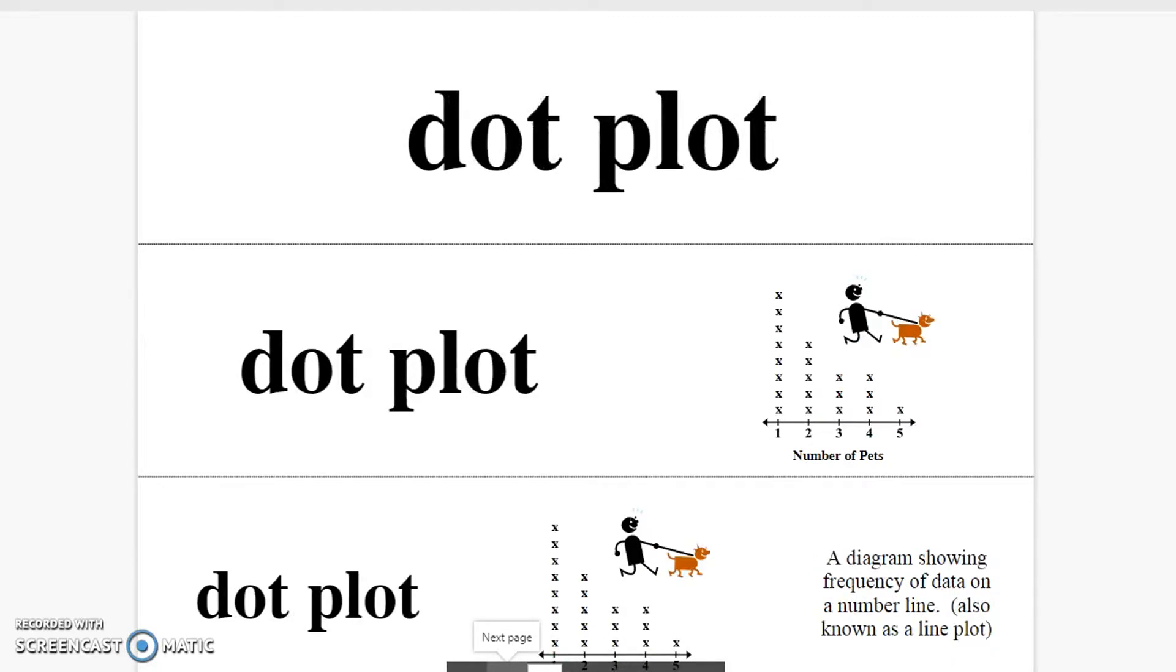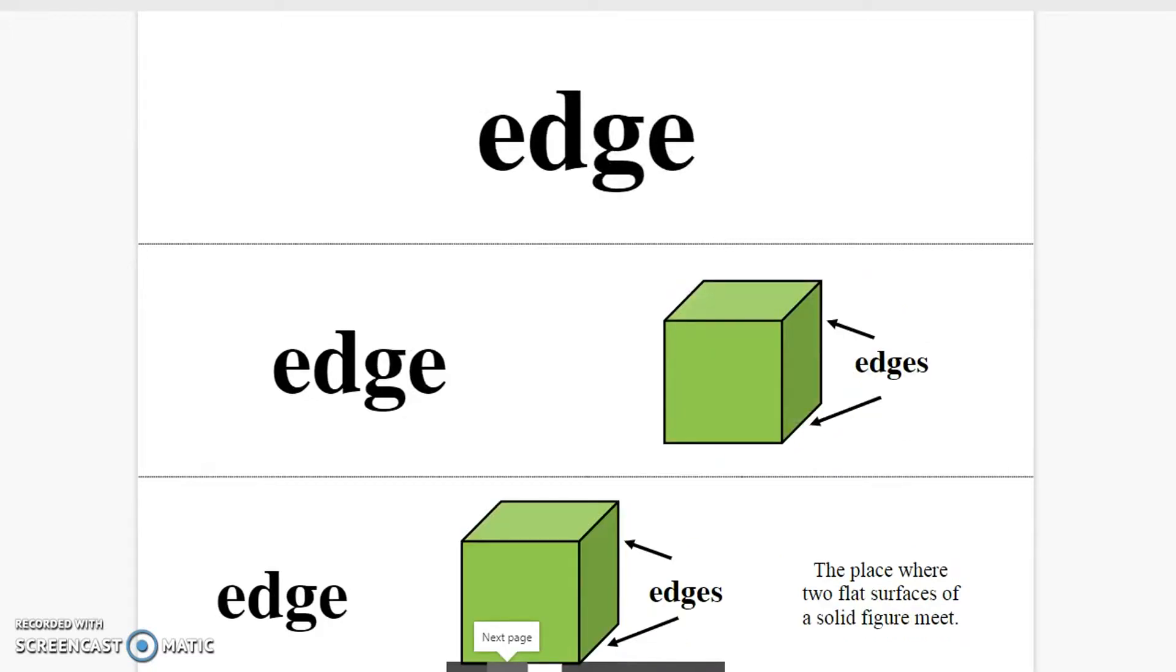Dot plot. A diagram showing frequency of data on a number line, also known as a line plot. Edge. The place where two flat surfaces of a solid figure meet.